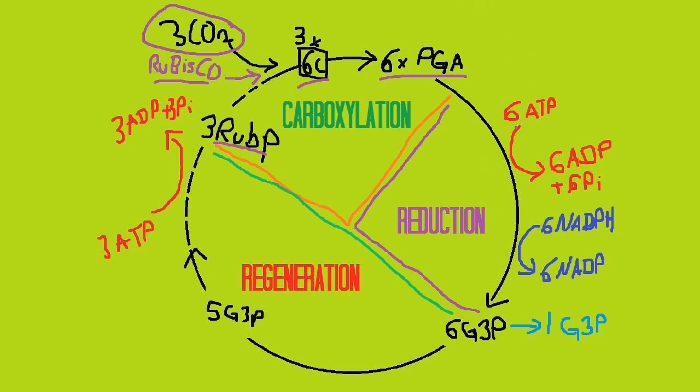This is then reduced by ATP and NADPH. Both ATP and NADPH are oxidized in this process. That's important. This forms six G3P molecules, which is triose phosphate.